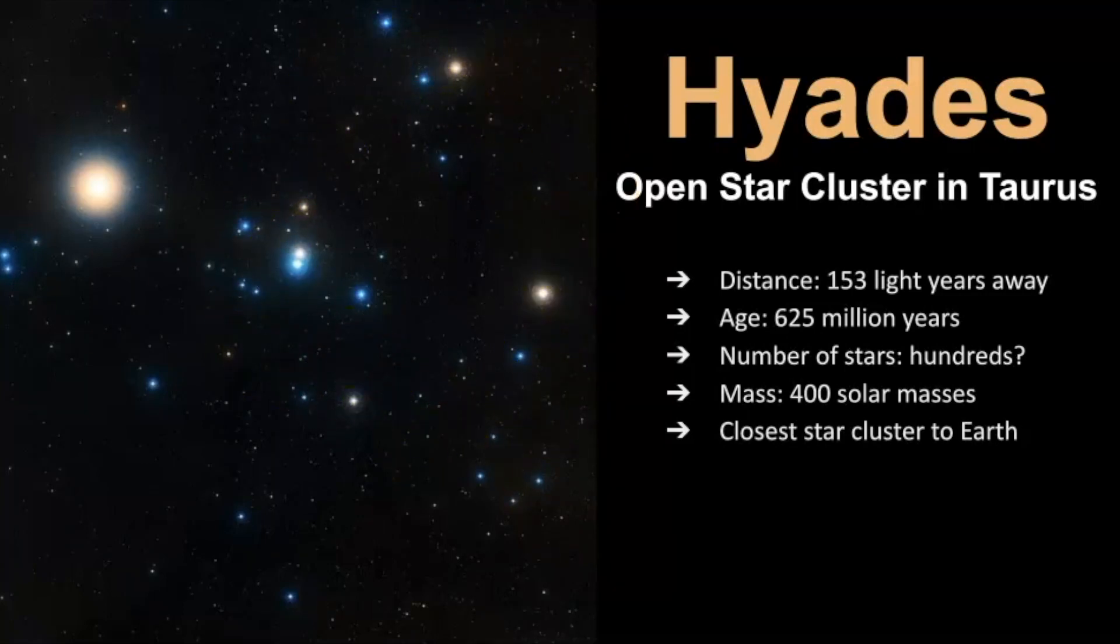So in terms of mass, it's not as massive as the Pleiades, it's estimated to be 400 solar masses and in terms of how many stars here I really struggle to pin down the number. So it's estimated to be in the hundreds but it could be more and it is the closest star cluster to Earth. That's why it's heavily studied because of its distance and we know a lot about this star cluster.